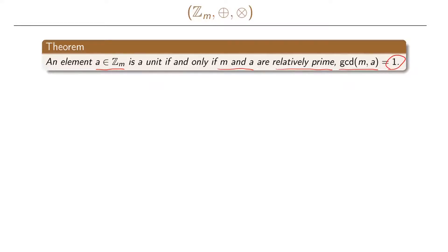We will leave this without a formal proof, but we can note that we can use Bezout's identity to derive the inverse of element a. We have gcd(m, a) equals 1, and according to Bezout's identity we can write this as s times m plus t times a. If we take this modulo m, we get the remainder when dividing by m.